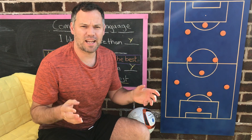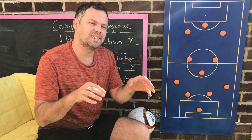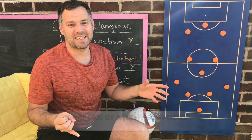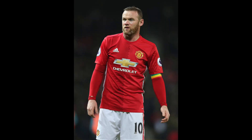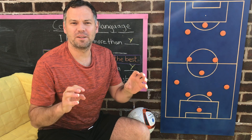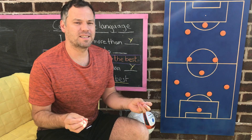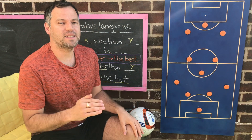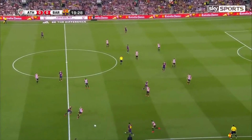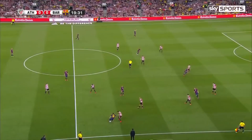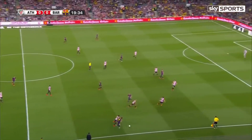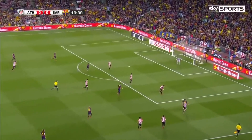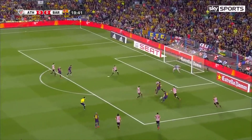The last position — and you probably know who it is going to be — on the right side of the front three. The choice is Messi or Rooney. I really like Rooney, he was a phenomenal player, but Messi is probably the best. So Messi — I prefer Messi to Rooney. Look at this — it's a brilliant run from Messi, and they go all the way!